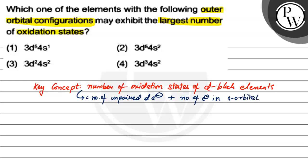Let's check option-wise. We have 3d⁵4s¹, which means 5 unpaired electrons plus 1, which is 6. Then we have 3d⁵4s², which is 5 plus 2, giving us 7. Then we have 3d²4s², which is 2 plus 2, equals 4.